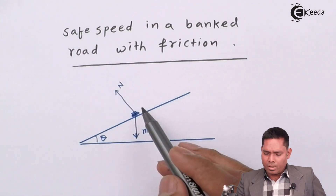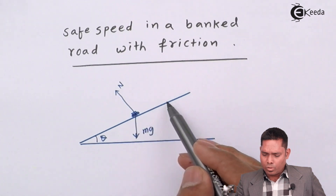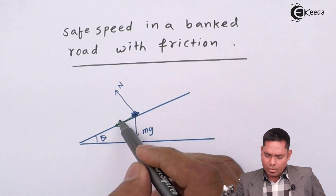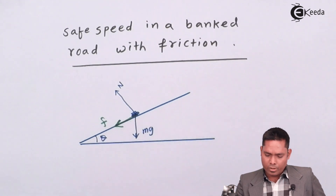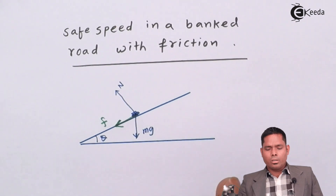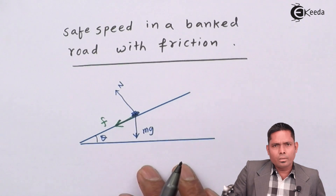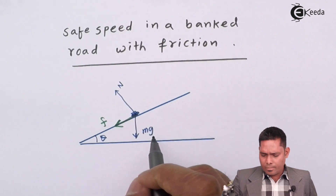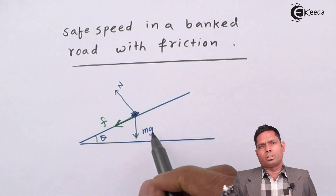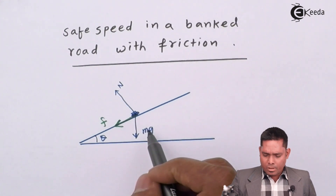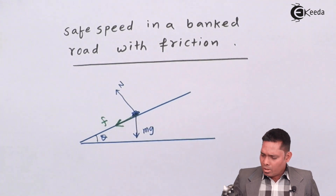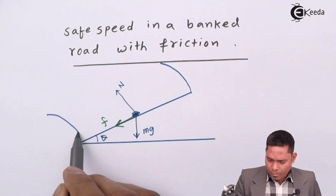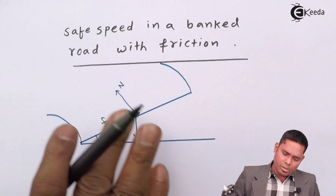When finding the safe speed, the body's tendency is to skid away outward, so friction will act downward along the surface in that direction. So these are the three forces acting on the vehicle. We will find the net force towards the center, which is responsible for the circular motion of this object moving in this path.